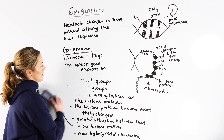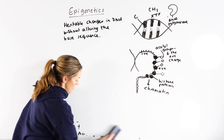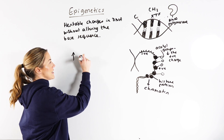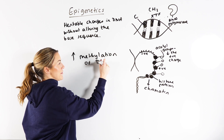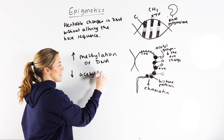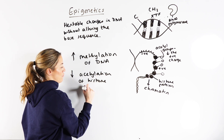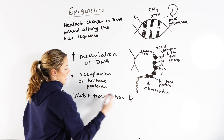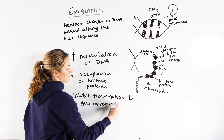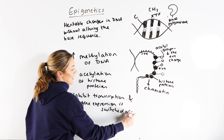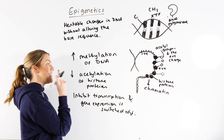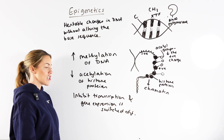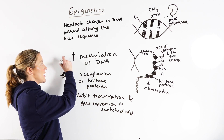In summary, the most important things to remember: if we increase methylation of DNA, or we decrease acetylation of histone proteins, we can inhibit transcription and gene expression is switched off. I remember increased methylation and then the opposite — decreased acetylation of the histone proteins — both inhibit transcription because the transcription factor can't bind, so RNA polymerase cannot initiate transcription.